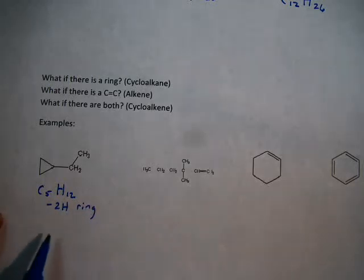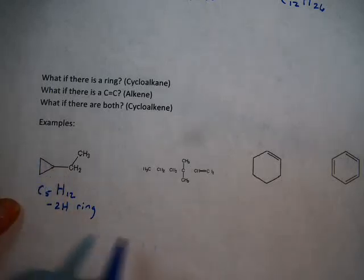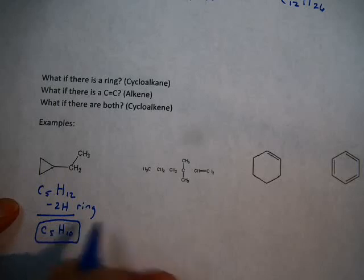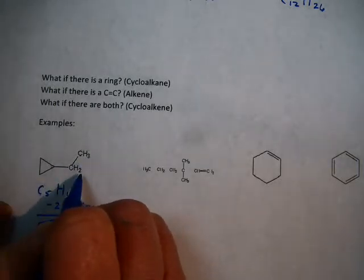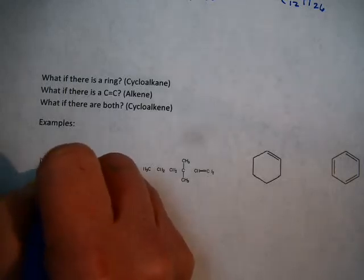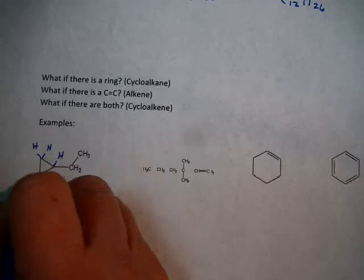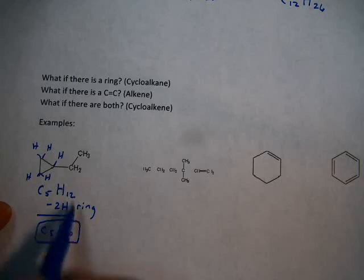You have to subtract 2 hydrogens every time you have a ring, because in order for the 2 carbons to make a bond to each other, 2 hydrogens have to go away. So that means that the formula of this would be C5H10. This would be C5H10. We can count. I see that there's 1, 2, 3, 4, 5, 6, 7, 8, 9, 10. But I didn't have to count if I didn't want, because I can use this pattern.